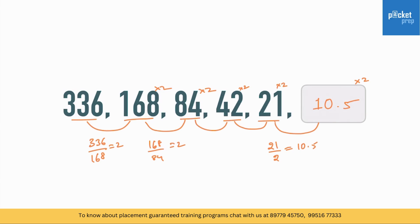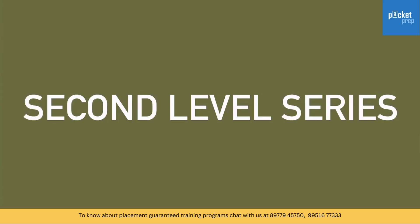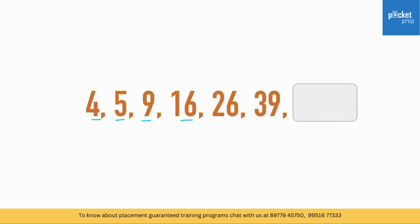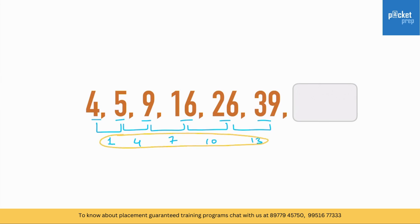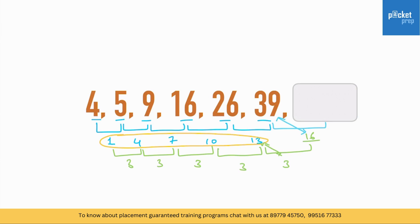The next type is the second-level series. Look at: 4, 5, 9, 16, 26, 39. The first-level differences are 1, 4, 7, 10, 13 — not constant. But at the second level, the differences of differences are 3, 3, 3, 3 — a constant. So the next first-level difference is 13 plus 3 equals 16, and the next term is 39 plus 16 equals 55.